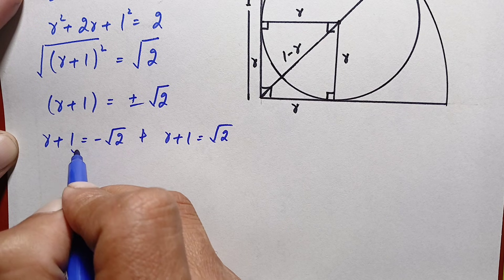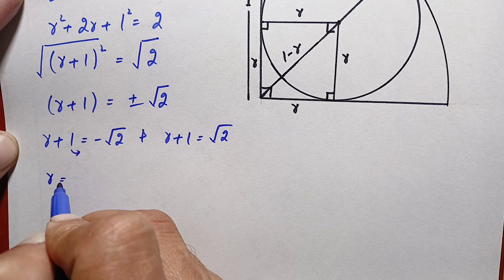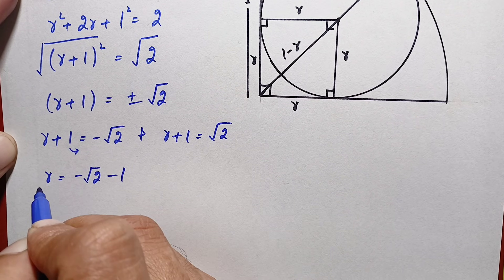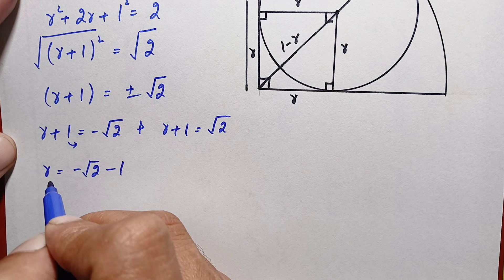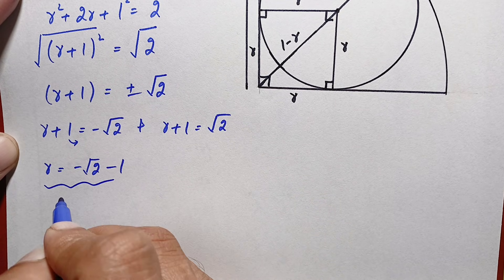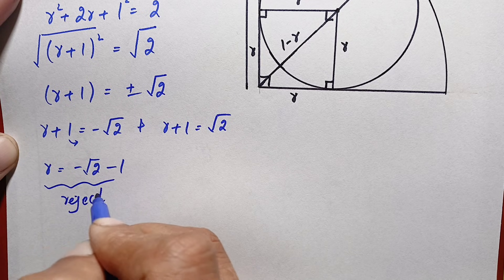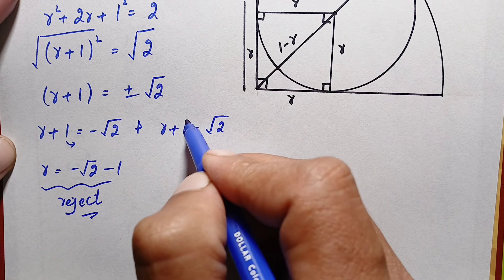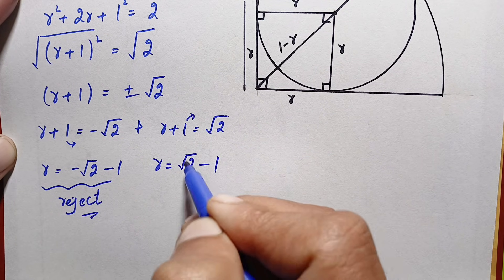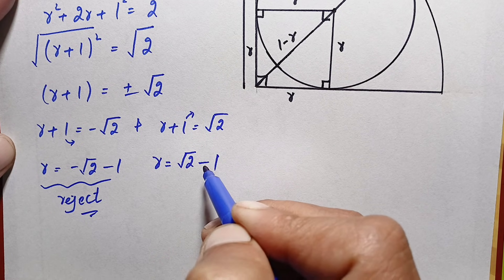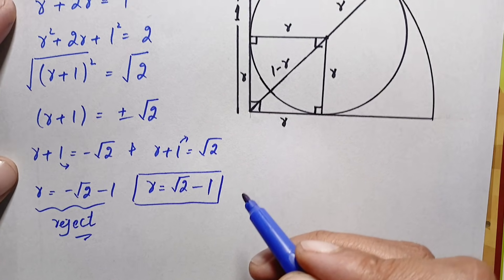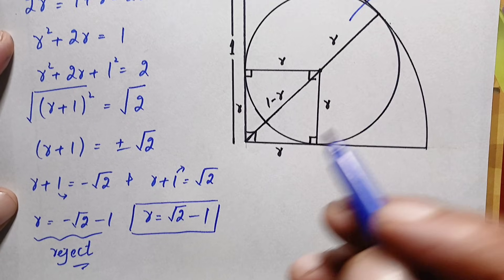Taking 1 to the right hand side, the first case gives r = −√2 − 1. However, r represents the radius of a circle, which is always positive, and this value is negative, so we reject it. For the second equation, r = √2 − 1. Since √2 is greater than 1, this value is positive, so this is the correct value of r — the correct radius of the inner circle.